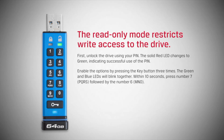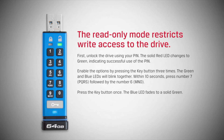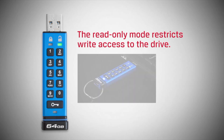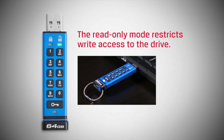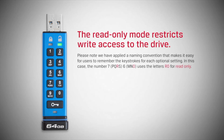The green and blue LEDs will blink together. Within 10 seconds, press number seven, followed by the number six. Then press the key button once. The blue LED fades to a solid green. When the drive is inserted into a USB port, the green LED blinks every two seconds to indicate read-only mode. The number seven and six uses the letters RO for read-only.